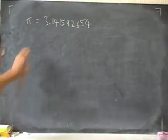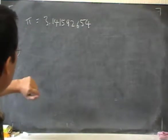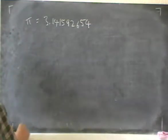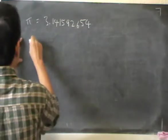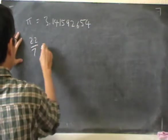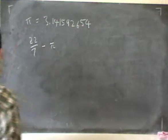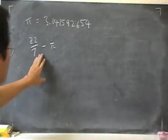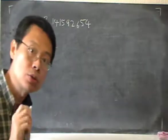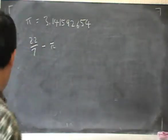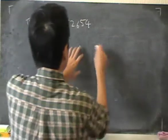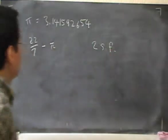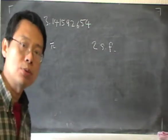So in this question, we are given a value for pi. And the question is to find the answer to this in two significant figures. So two significant figures.